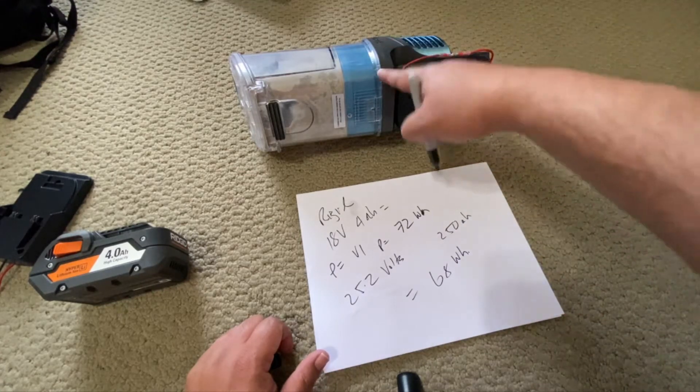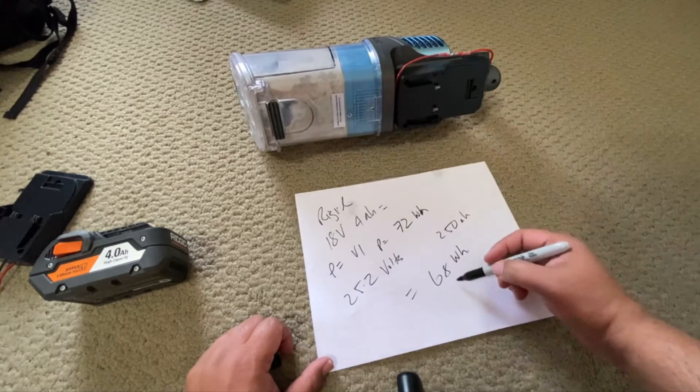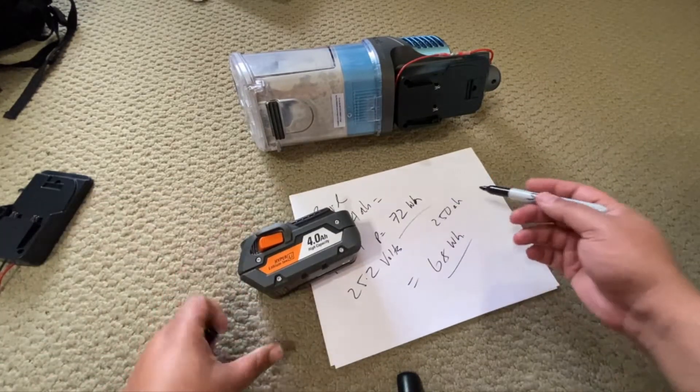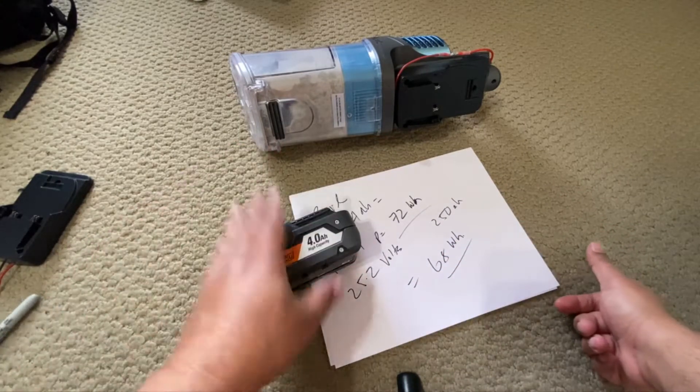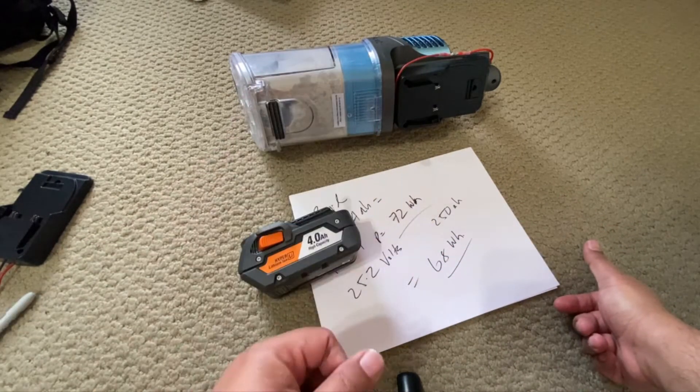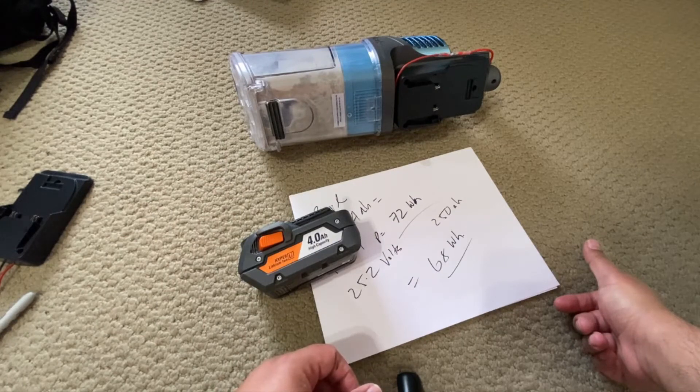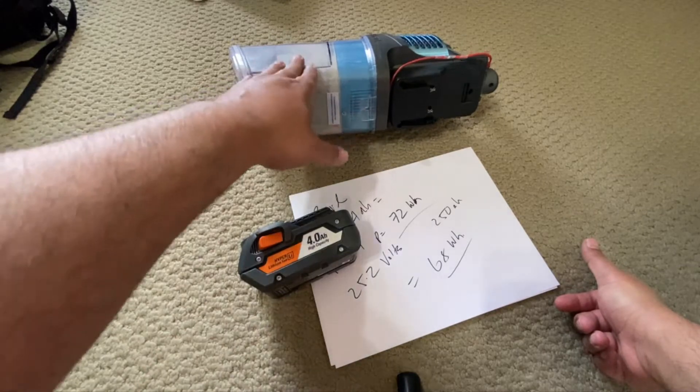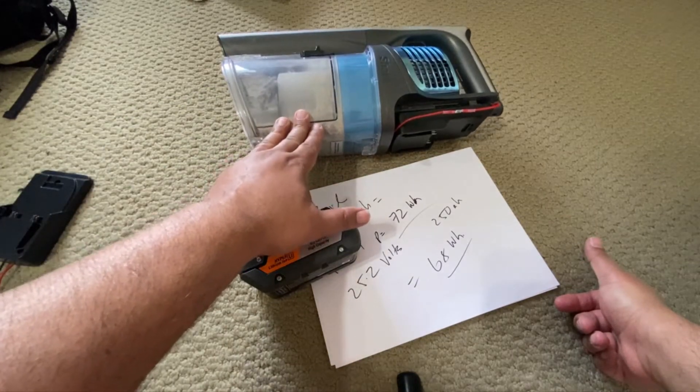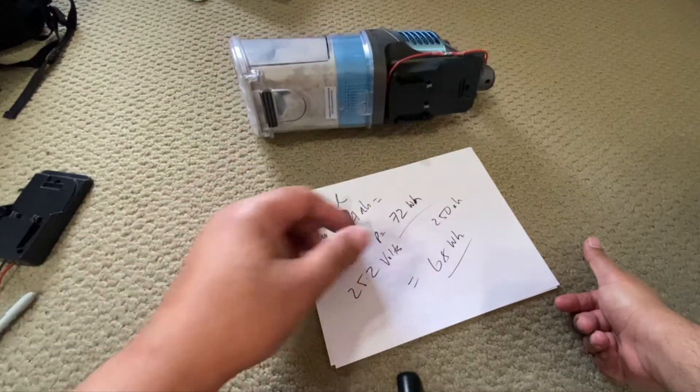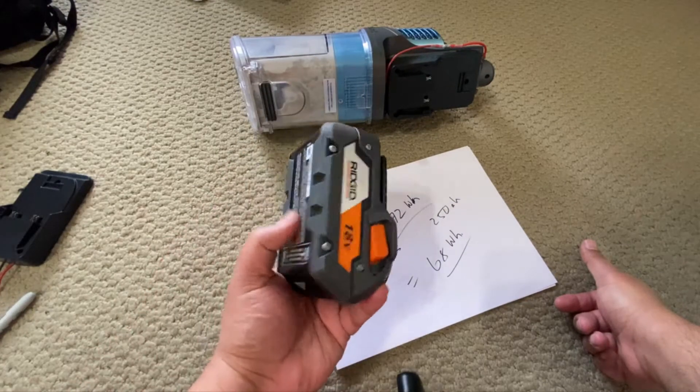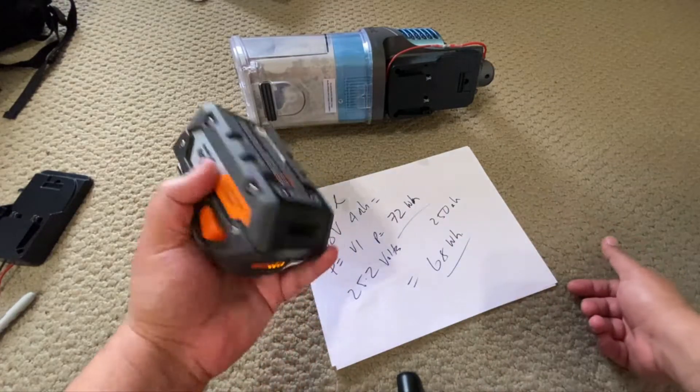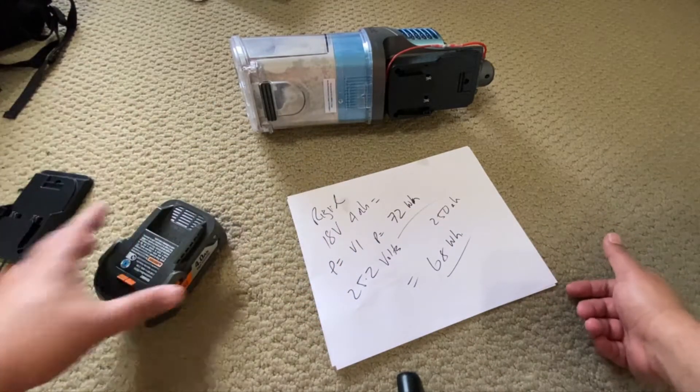So what is required for the Shark vacuum cleaner is 68 watts of power, meanwhile the Rigid supplies 72 watts of power. Therefore it's enough to give it enough power. If anything it may give it too much power, although I doubt it. It's pretty close give or take, and after using it this thing still runs and doesn't feel hot or anything.